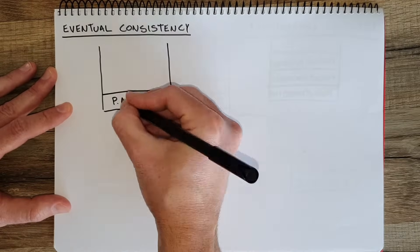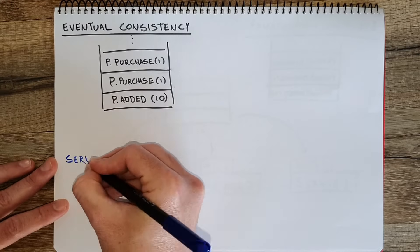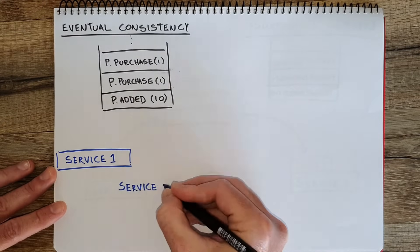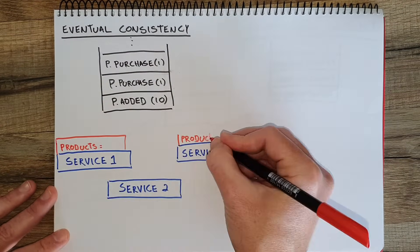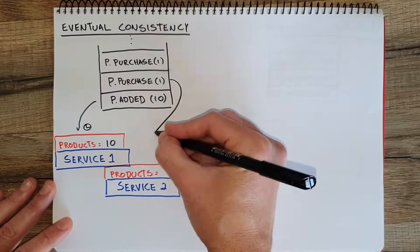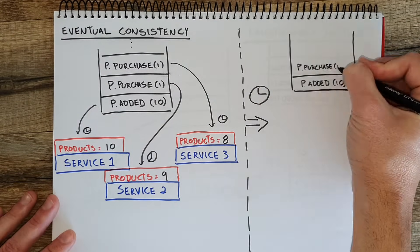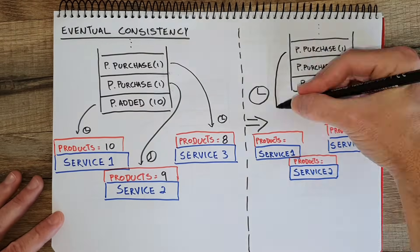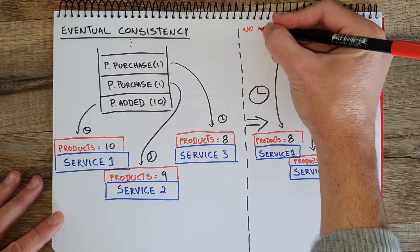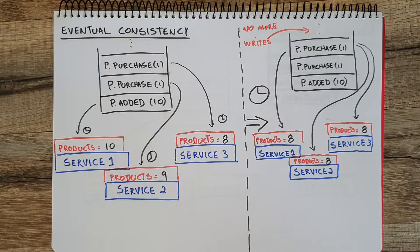There is something tricky about event sourcing though: you will have eventual consistency. Not all the systems will read the events at the same time from the event log — there will be a delay between reads. The recommendation, analytics, and inventory services might be out of sync sometimes when there is a lot of data being read. But as soon as there are no more writes into the event log, eventually they will converge into the same value. This is what is called eventual consistency.